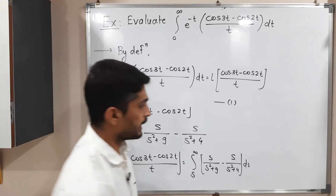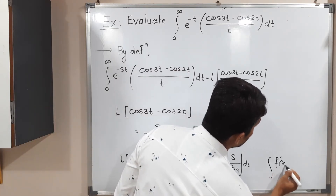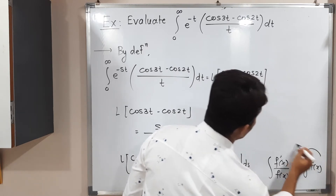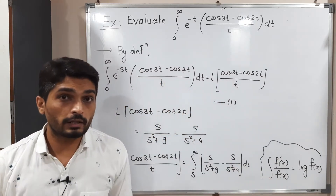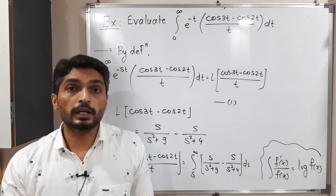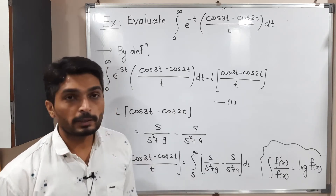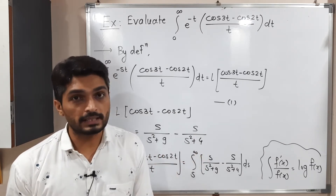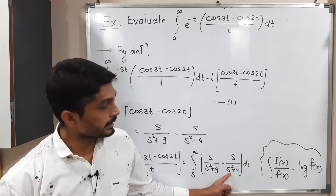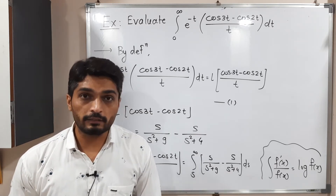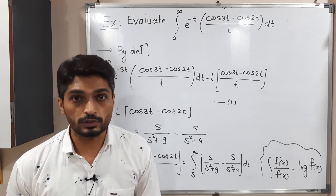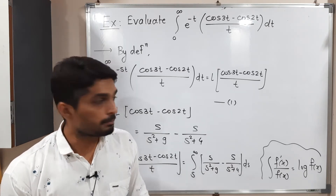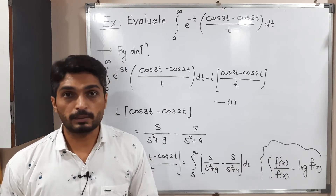To solve this integration we use the formula: the integral of f'(x)/f(x) equals log f(x). When the derivative of the denominator appears in the numerator, we can write log of the denominator. For s² + 9, its derivative is 2s; we have only s, so we adjust by a factor of 2. Similarly for s² + 4, the derivative is 2s, so we adjust the same way.